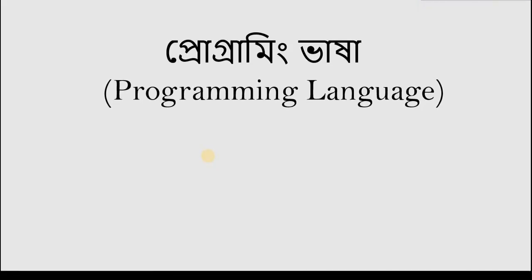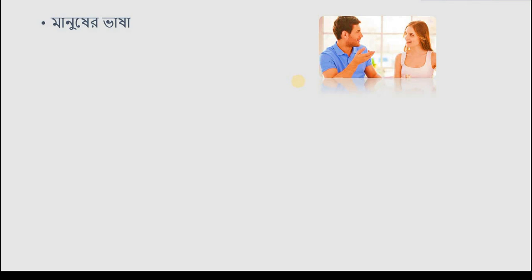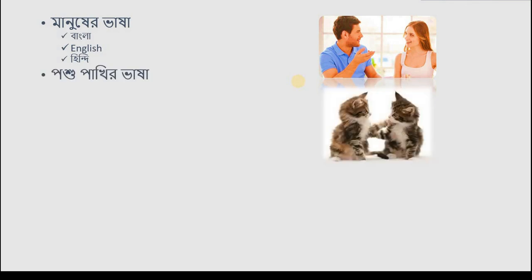Programming language — what is a programming language? A programming language is the language through which a person (a programmer) can communicate with a computer. Just as two human beings communicate with each other in a human language, a programming language allows a programmer to communicate with a computer.